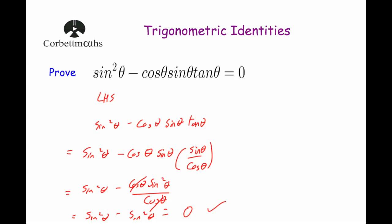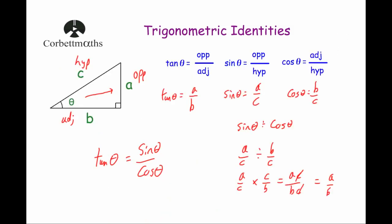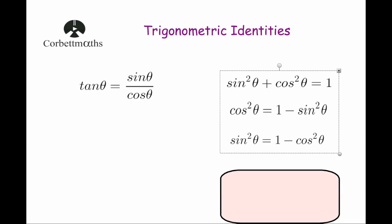So the two trig identities which may be very useful for your studies are: tan θ = sin θ / cos θ, and sin²θ + cos²θ = 1. It's also useful to know that cos²θ = 1 − sin²θ, and that sin²θ = 1 − cos²θ.